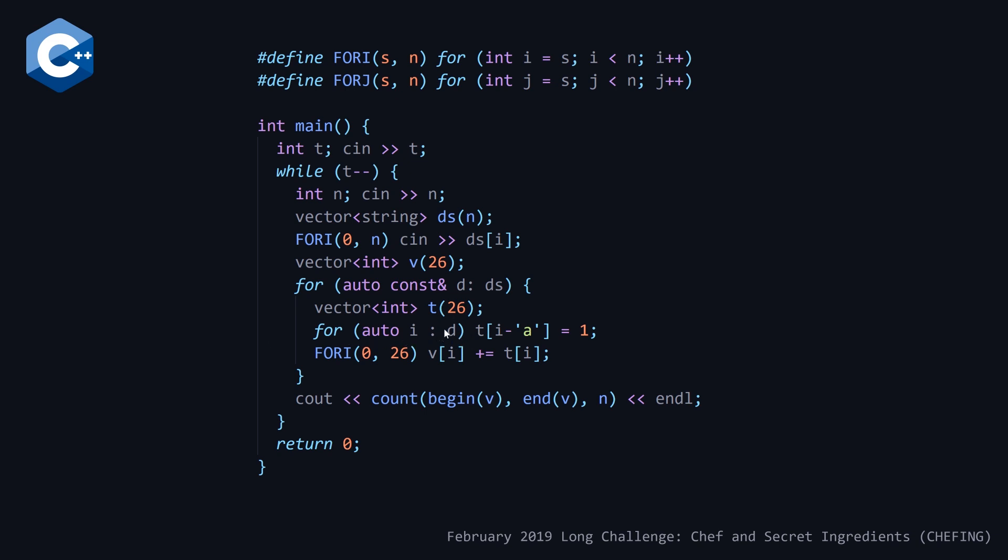Once we have gone through each of the ingredients in our dish, in other words each of the characters in our string, we do a plus equals of the ones and zeros in our Boolean vector to our final count vector v. Once we finish this range-based for loop, all we have to do is count the number of times we find the number n, which is the number of dishes, in our count vector v, and output that as our answer.